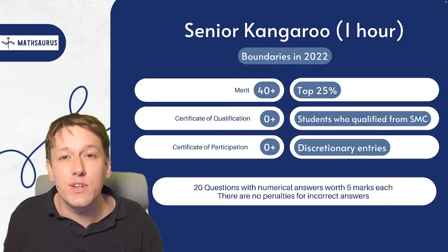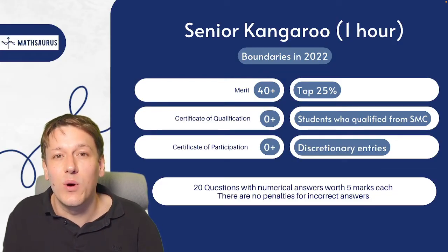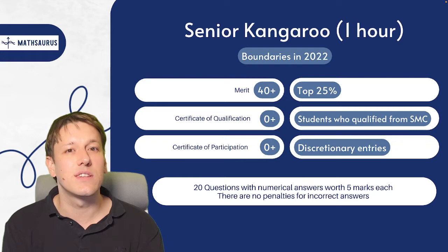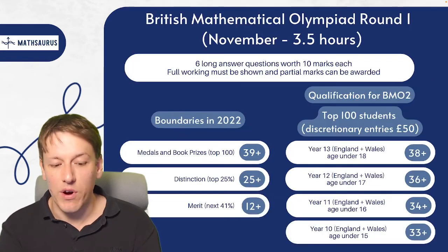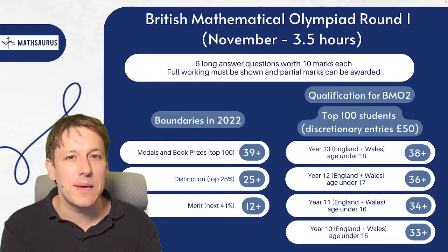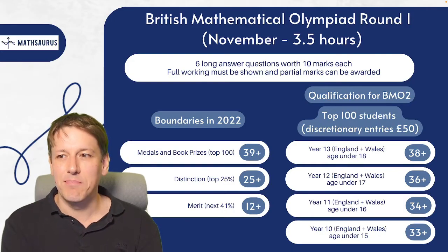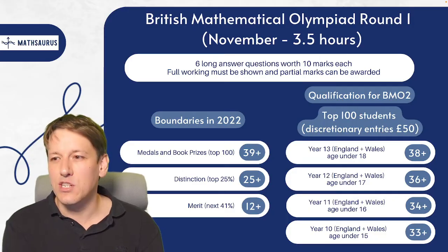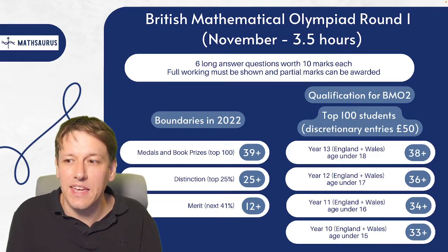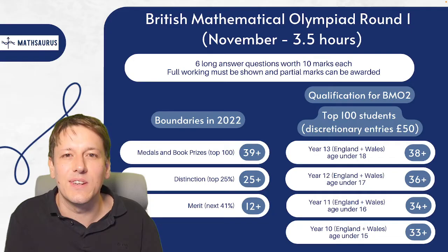The Senior Kangaroo has 20 questions with five marks each, and again the top 25% of students earn a merit. The merit boundary is quite a low score because these are very challenging questions. You can get a certificate of participation as a discretionary entrant or a certificate of qualification if you qualified from the Senior Maths Challenge. BMO round one usually happens in November — a three-and-a-half-hour paper with six long-answer questions worth 10 marks each. About two-thirds of entrants get a distinction or merit, but the scores look quite low given how tough the problems are.